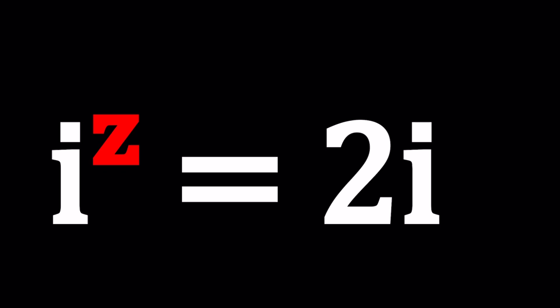Some people think that this equation has no solutions because when you take the absolute values you have i on the left hand side at the base. Its absolute value is 1. But on the right hand side we have a number whose absolute value is equal to 2.